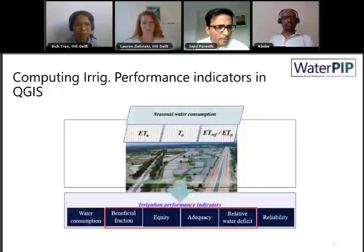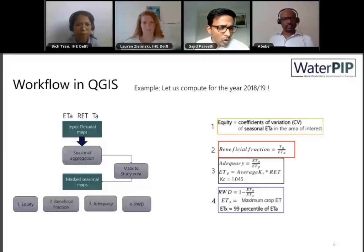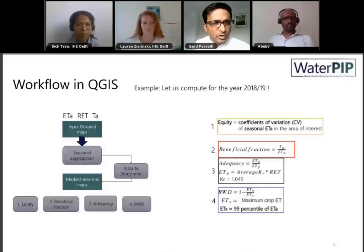This is the workflow. We have three variables: actual ETa, transpiration, and reference ET. First we do a seasonal aggregation to get seasonal maps. We mask to the study area, and then from the masked seasonal maps we compute the indicators. Without further delay, let us get into QGIS.